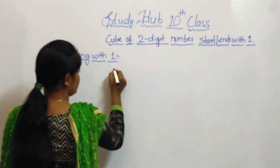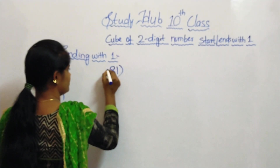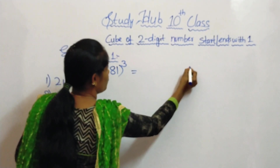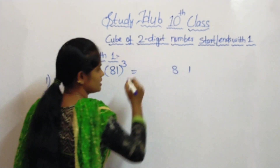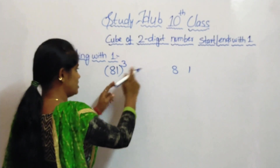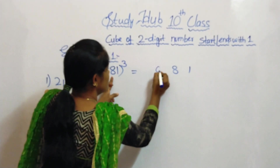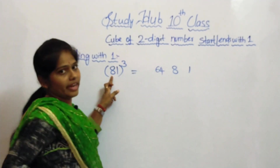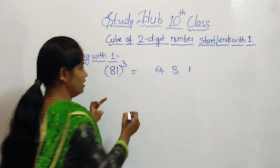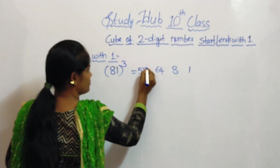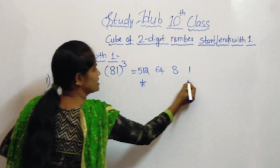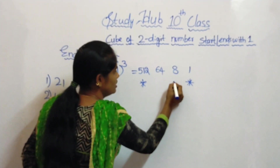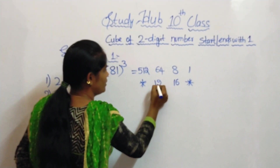Third example: 81. The fourth place is 1 and the third place is 8, written as it is. In the second place, take the square of 8 — 8 squared is 64. And in the first place, write 8 cubed — 8 cubed is 512. Now exclude the first and fourth places, and take twice of 8 and 64. 8 twos are 16 and 64 twos are 128.